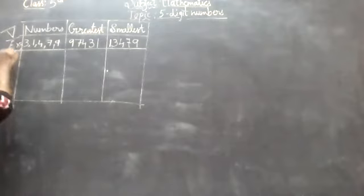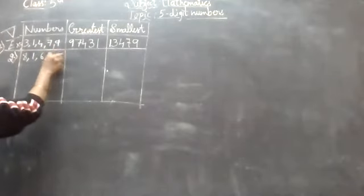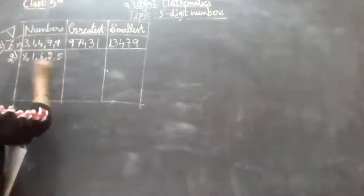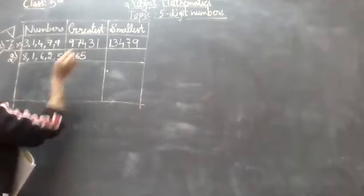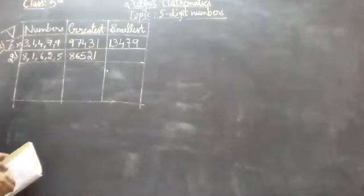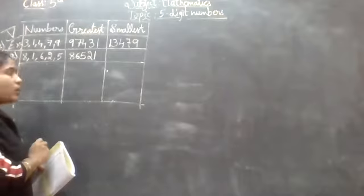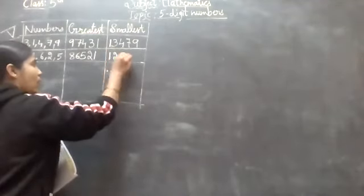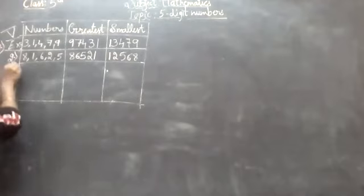Let us see the first question. The second example given is: 8, 1, 6, 2, 5. The greatest number: eight is the biggest, after eight comes six, after six comes five, after five comes two, after two comes one. So the greatest is 86,521. I hope you have written the same answer. Then small to big, that is ascending order: one, two, five, six, eight. So this is our smallest number, 12,568.